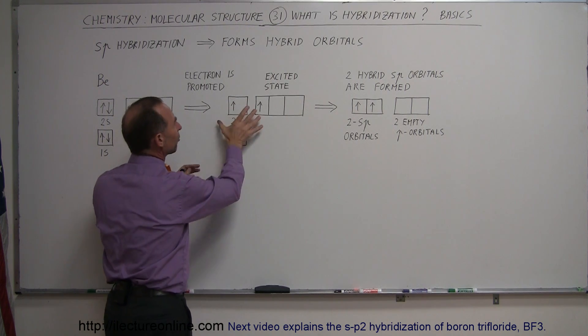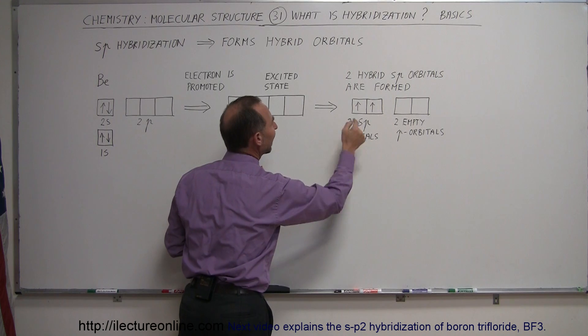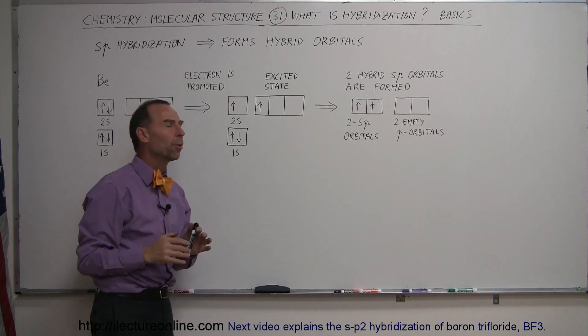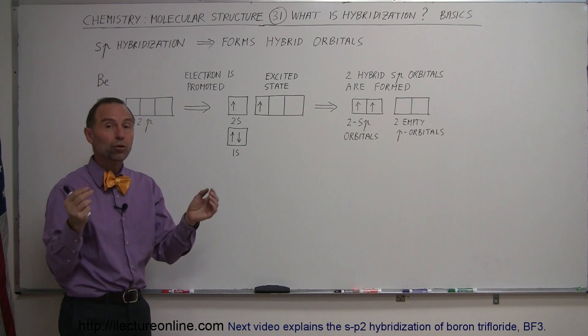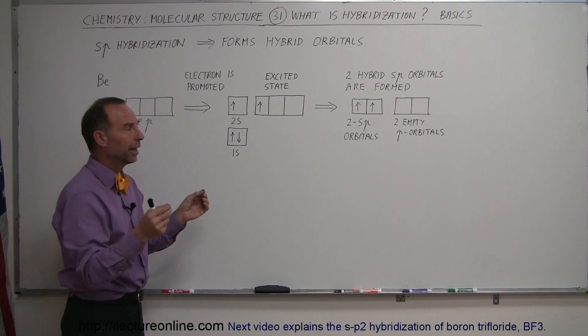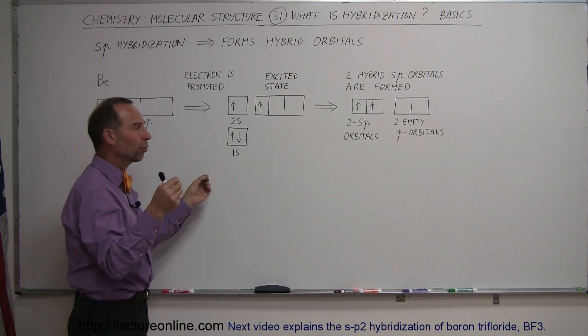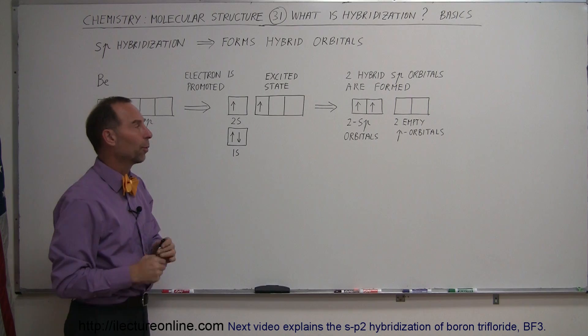So we put some energy into it, we get an excited state and from that we create two new orbitals, two what we call sp orbitals and we'll see in just a moment what that is. You might already get a feel for that. An sp orbital is a new orbital that's shaped out of an s orbital and a p orbital. And so from taking an s orbital and a p orbital we can shape two sp orbitals and we'll see in just a moment what that is.